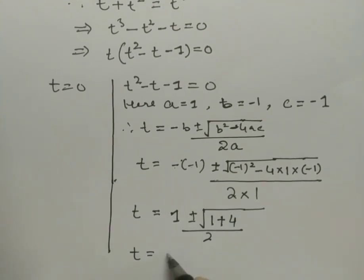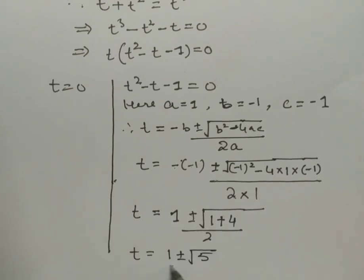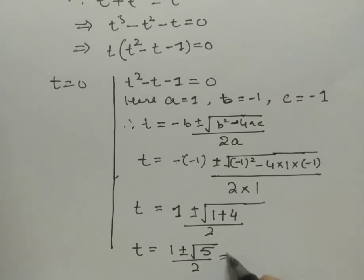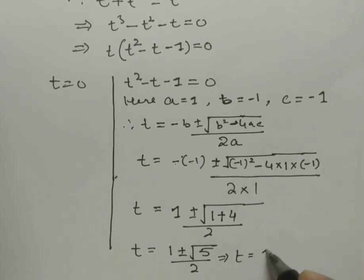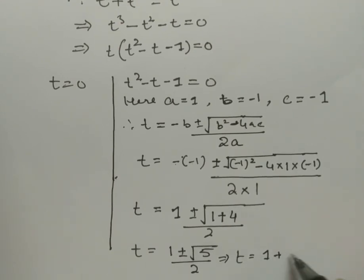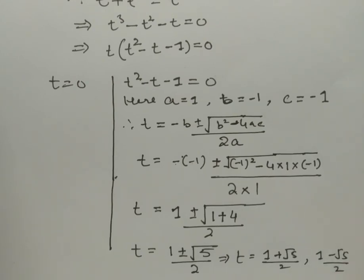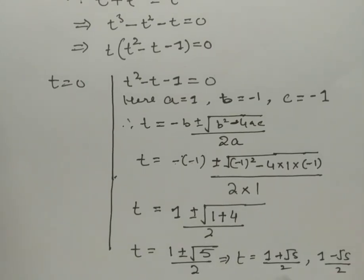Therefore t = (1 ± √5) / 2. The two possible values are t = (1 + √5) / 2 and t = (1 - √5) / 2.